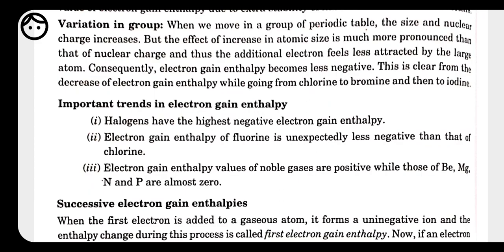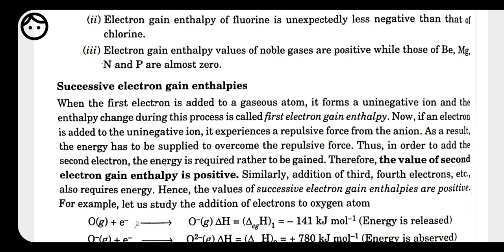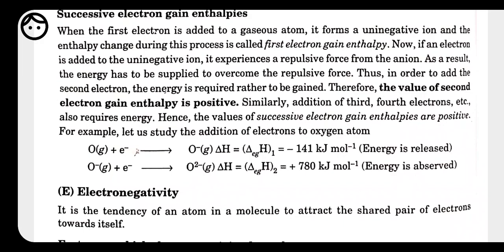Successive electron gain enthalpy: for oxygen, which needs two electrons to attain stability, the first electron added has a negative electron gain enthalpy. But when the second electron is added, it experiences repulsion from the existing electrons already in the shell. Energy must be supplied to add this electron, so the successive electron gain enthalpy becomes positive.